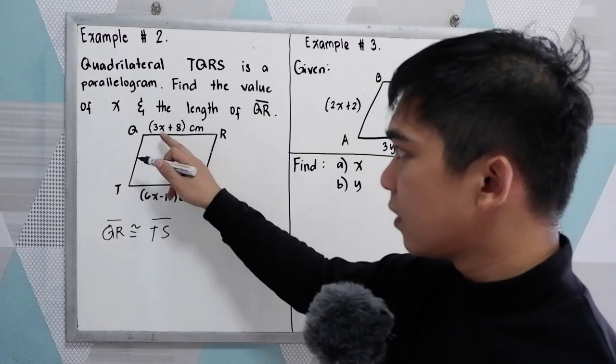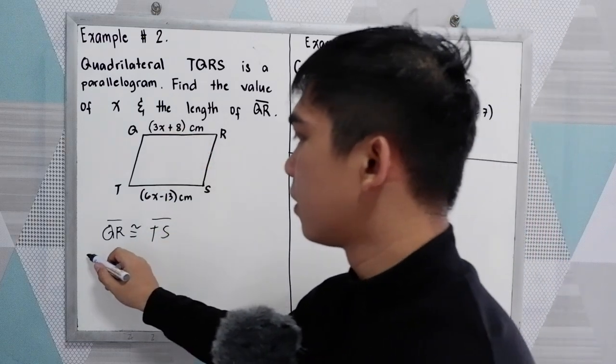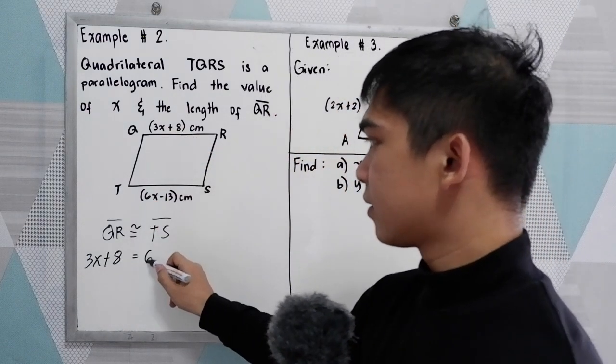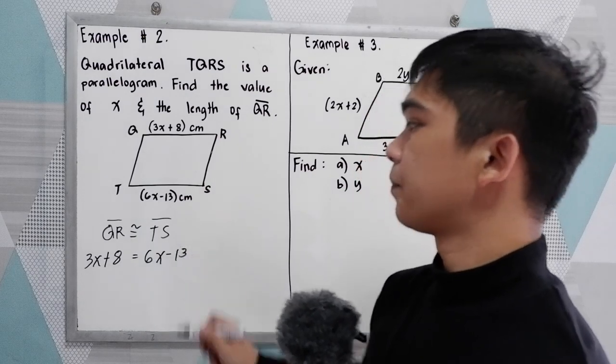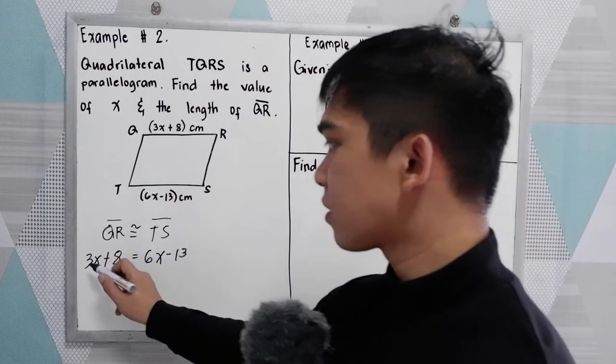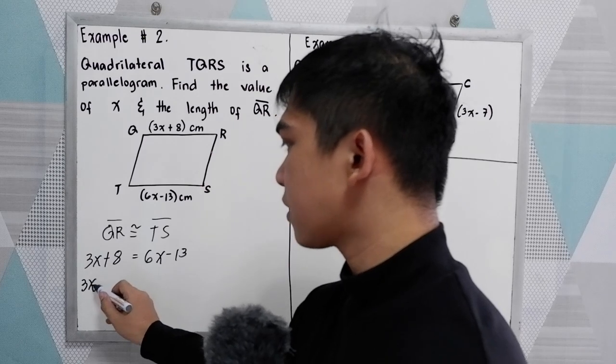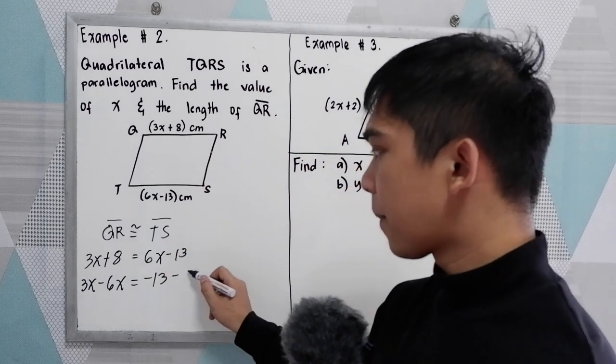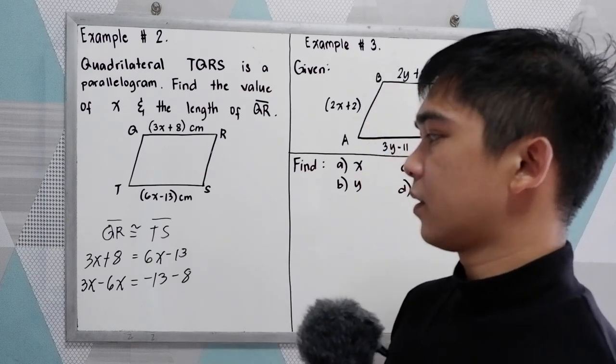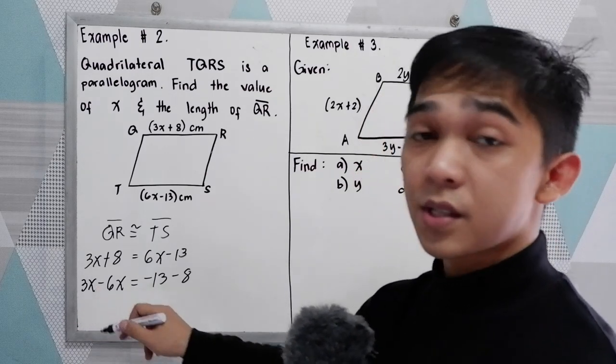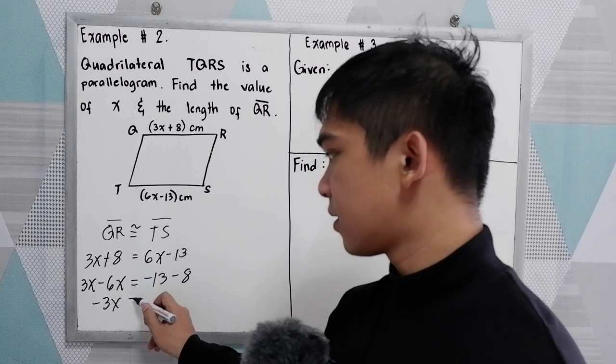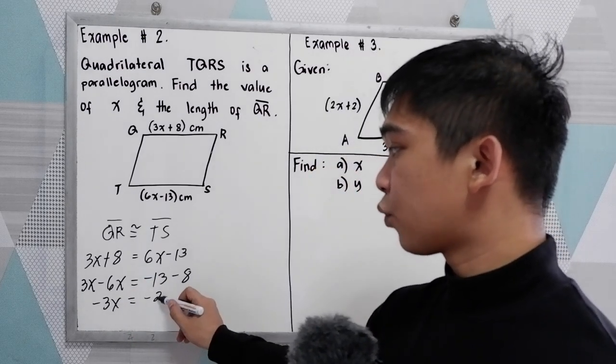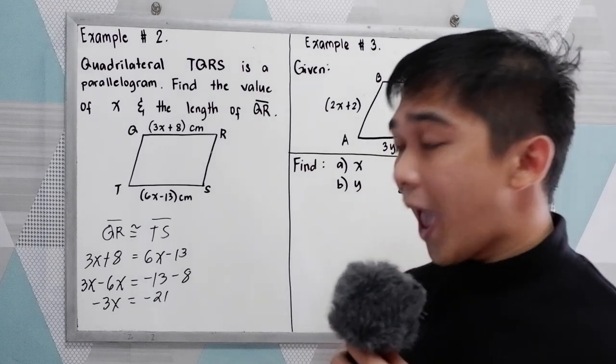Now substitute the given. QR is 3x plus 8 is equal to 6x minus 13. Now solve for x. We have 3x minus 6x is equal to negative 13 minus 8. That is negative 3x is equal to negative 21.